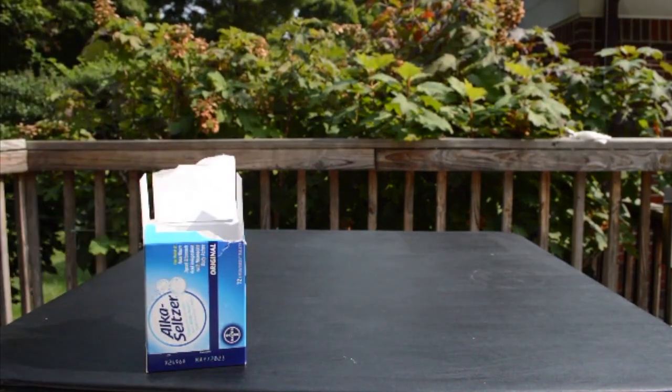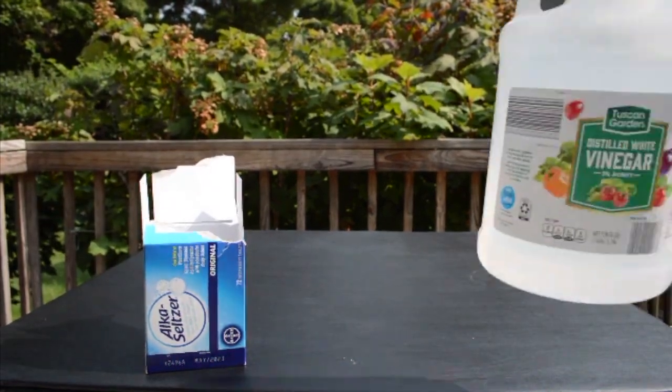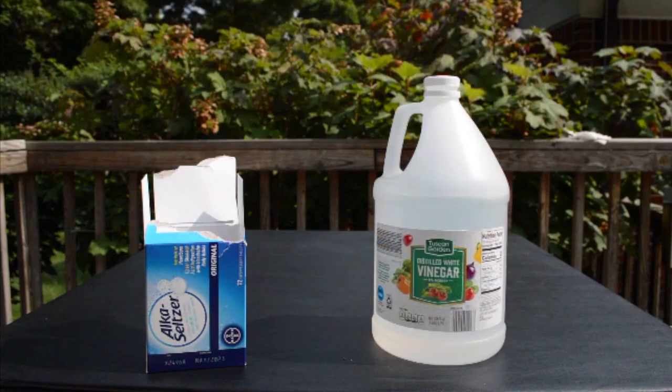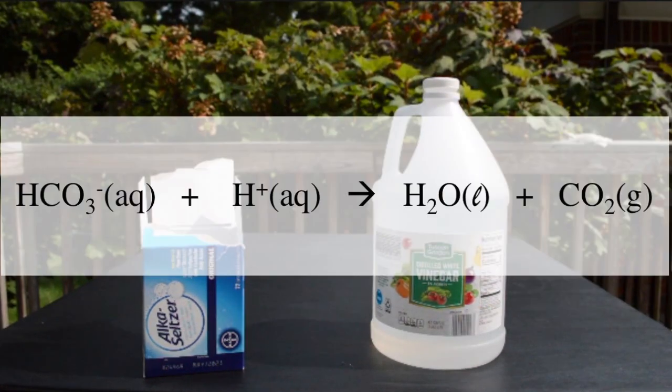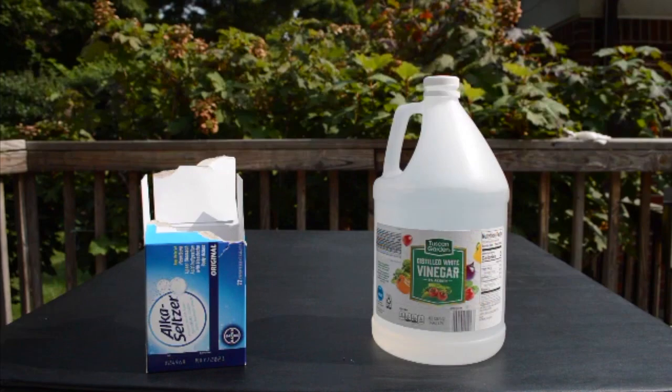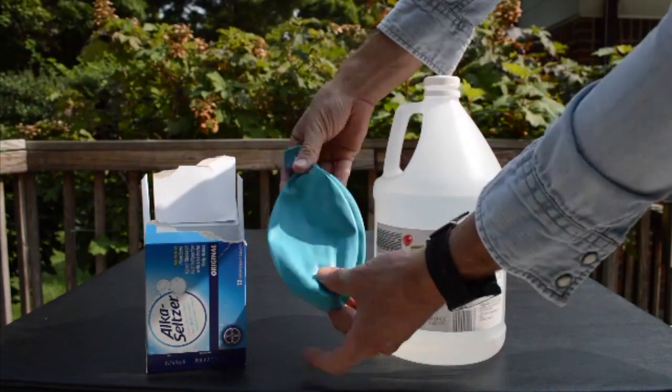First, we'll get some Alka-Seltzer tablets and some vinegar. These substances will react with each other to produce CO2 according to this chemical equation. We're going to capture the gas in a balloon. 22.4 liters is actually a really large volume. So we'll need to use this extra large balloon.